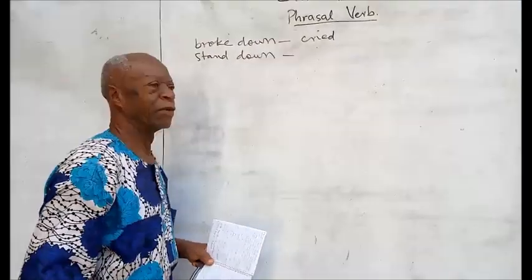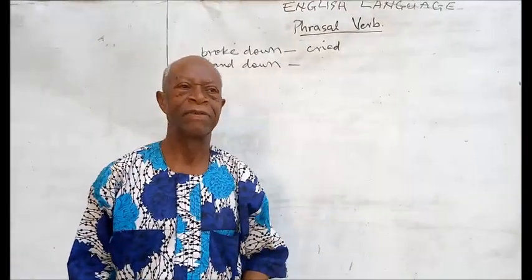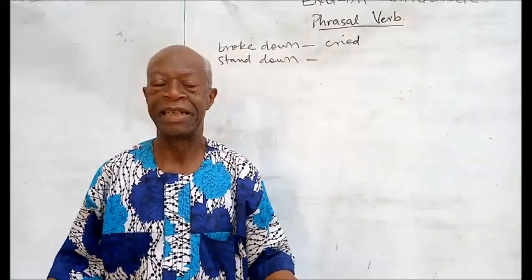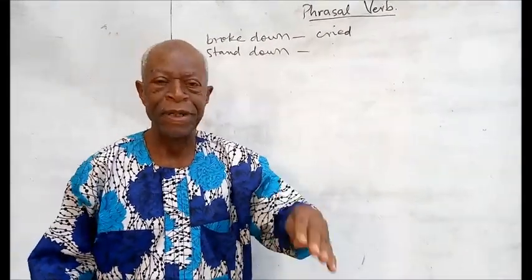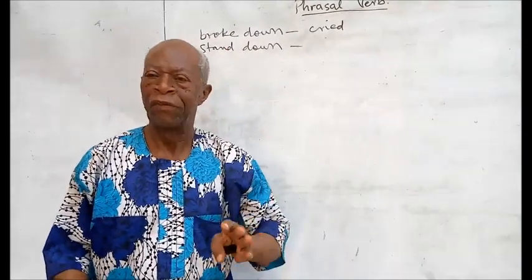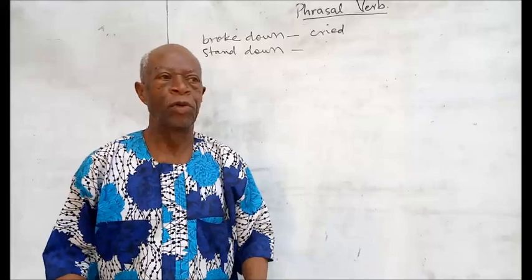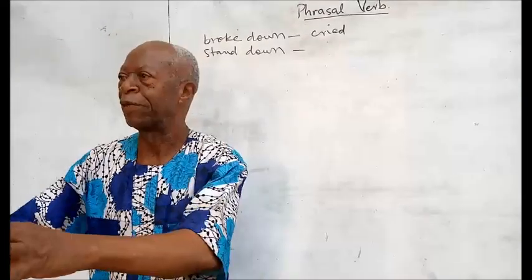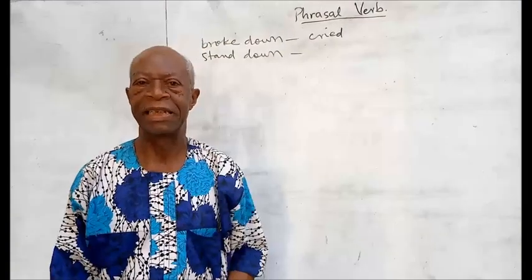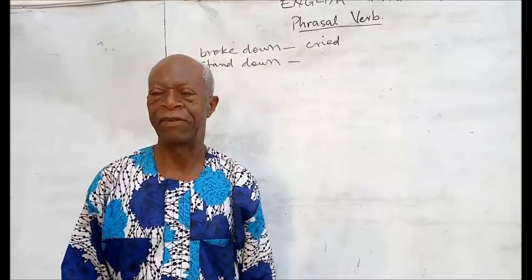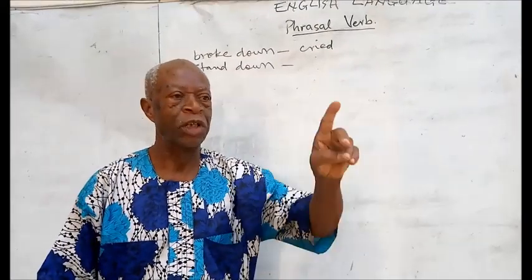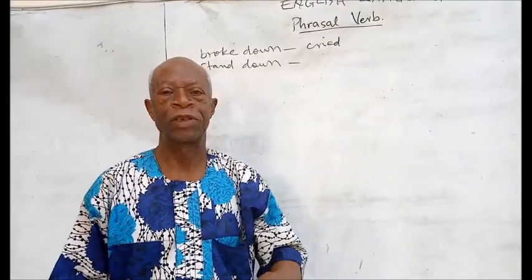Another example is 'stand down.' If you compare the words 'stand' and 'down' separately, you cannot get the meaning. But actually, it means to give place to another person. For example, if you want to contest for a membership in your class and there are three people trying, then two people stand down — meaning they are giving place, leaving only one person to contest.